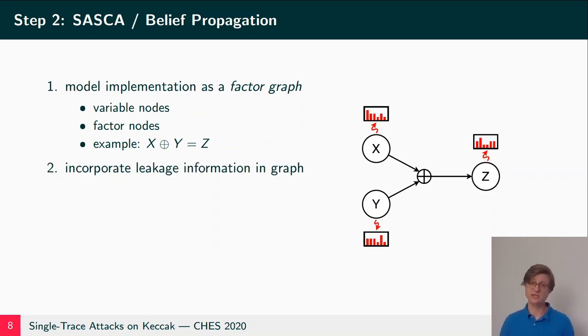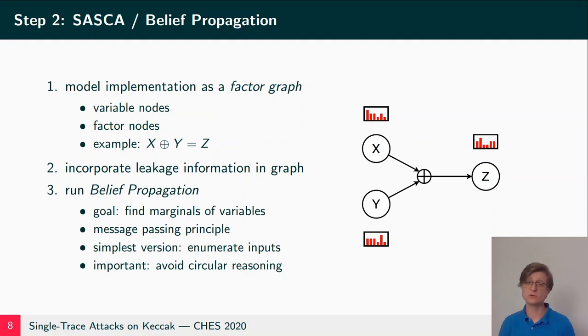For instance on the factor graph on the right, where we have three variable nodes X, Y, and Z, they are connected by an XOR so that we have X XOR Y equals Z. In the next step we incorporate the leakage information that we got from the template attack in the graph. Assume that we have leakage information on X, Y, and Z. And then we run belief propagation on this graph.